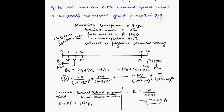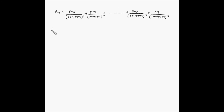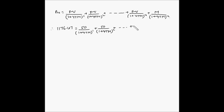We can now plug this value into the formula. B0 is 1176.47. The future value at each period is the interest amount of 50. So: 1176.47 equals 50 divided by one plus YTM to the power 1, plus 50 divided by one plus YTM squared, and so on up to 50 divided by one plus YTM to the power 16, plus 1000 divided by one plus YTM to the power 16. When we solve this, we get yield to maturity equal to 3.5368%.